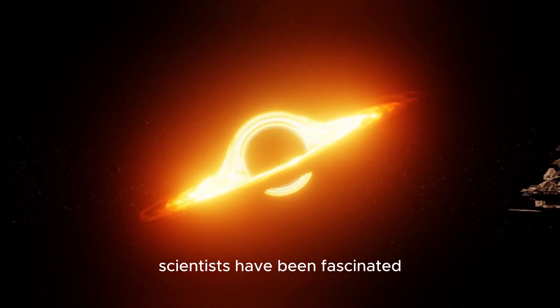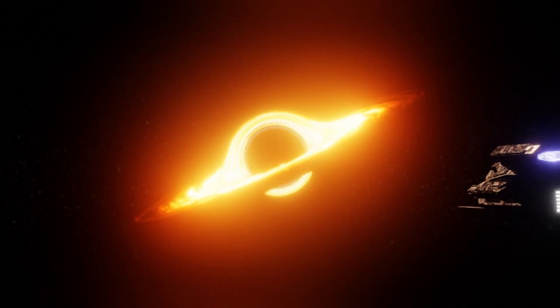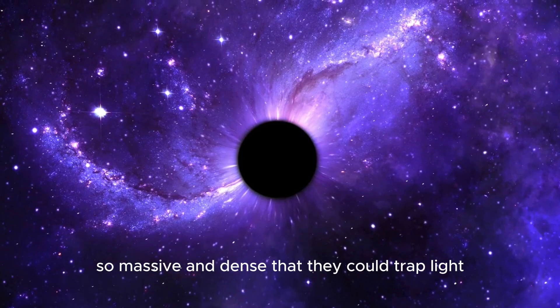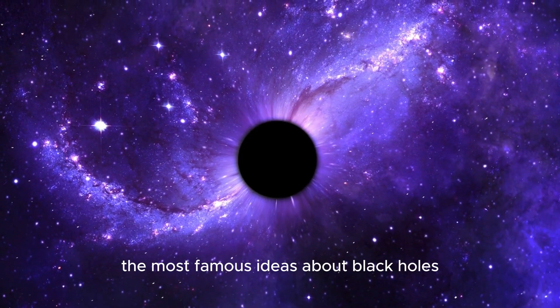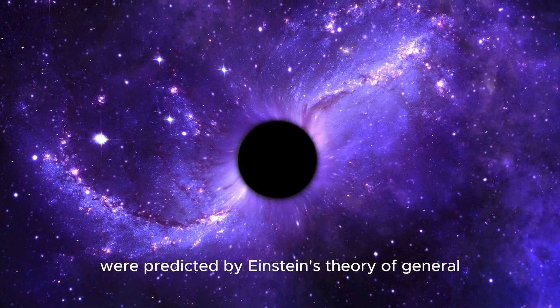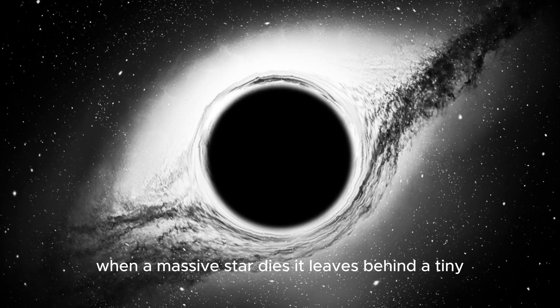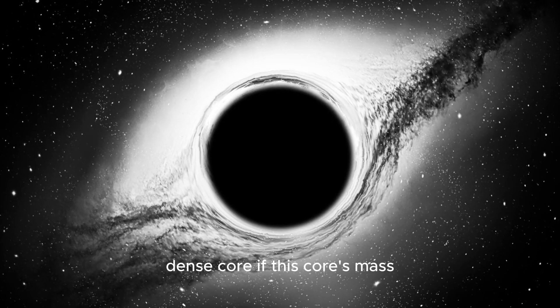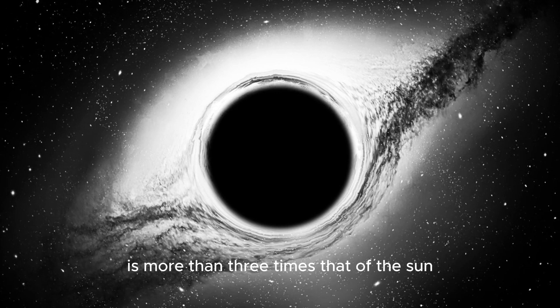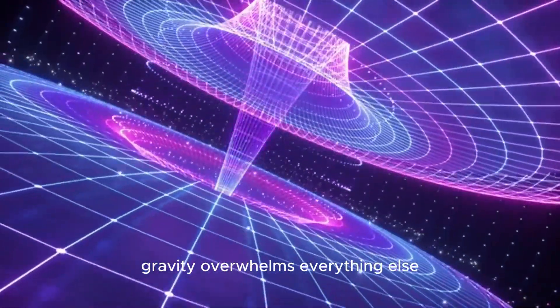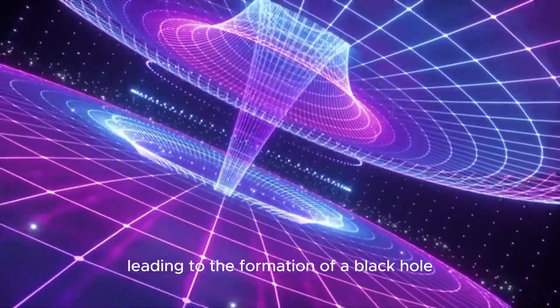Scientists have been fascinated by black holes for centuries, ever since they pondered objects in space so massive and dense that they could trap light. The most famous ideas about black holes were predicted by Einstein's theory of general relativity. Essentially, when a massive star dies, it leaves behind a tiny dense core. If this core's mass is more than three times that of the sun, gravity overwhelms everything else, leading to the formation of a black hole.